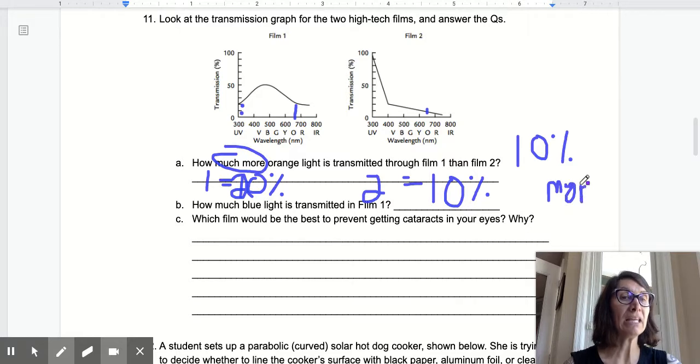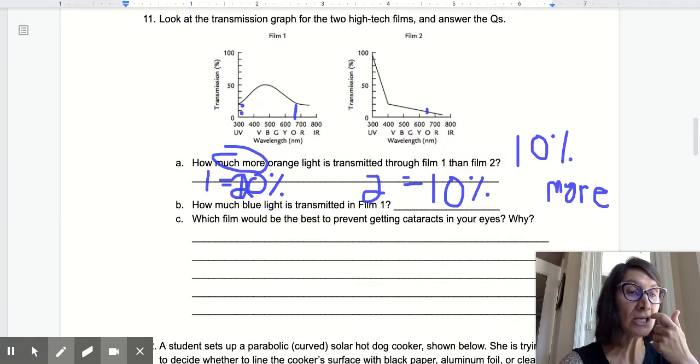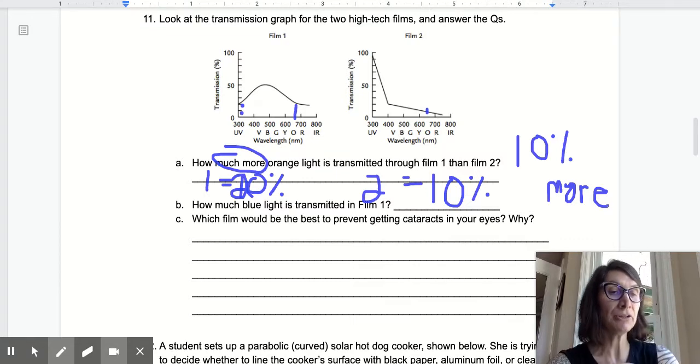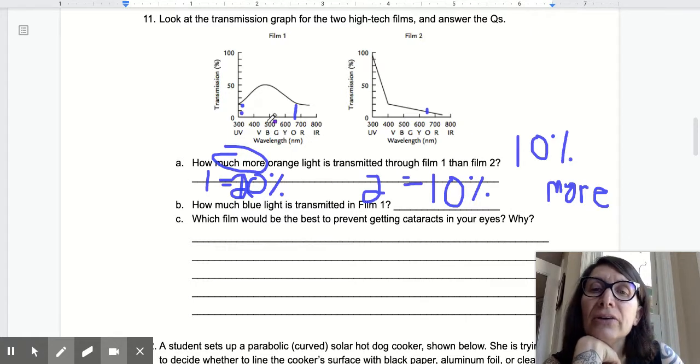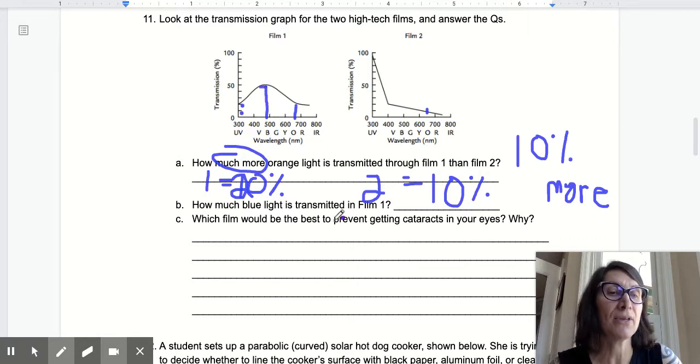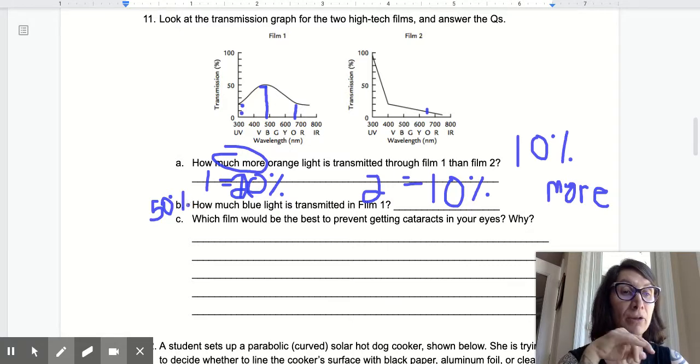So the question though, is how much more light is transmitted through film one than film two. So it's literally 10% more. So one of the things is remember, as I'm grading your quizzes, I can't talk to you and have a conversation. So make sure you are clearly explaining. Number B, part B is how much blue light is transmitted in film one. So the blue is here. And so blue, I make my line up as straight as I possibly can. And I come over and it's about 50%. So B is 50%. 50% of blue light is transmitted with film A.